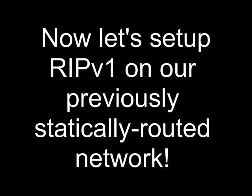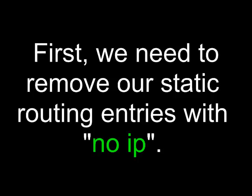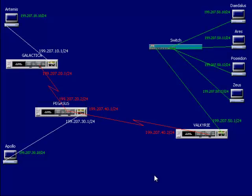Now let's set up RIP version 1 on our previously statically routed network. First, we need to remove our static routing entries with no IP. We've looked at setting up static routing and configuring a gateway of last resort, and now let's take a look at some dynamic routing protocols.